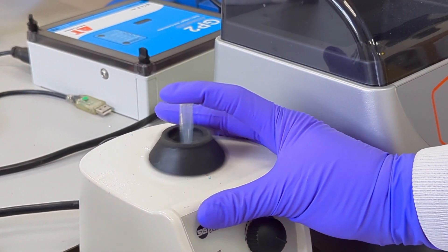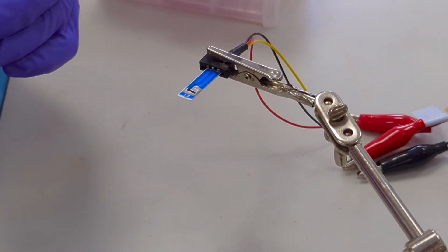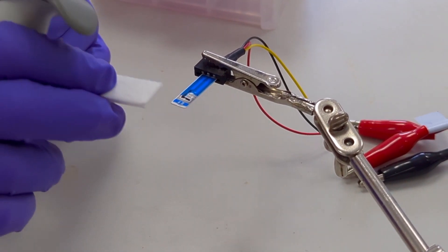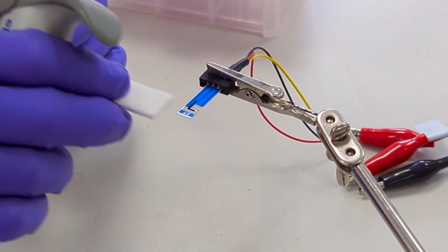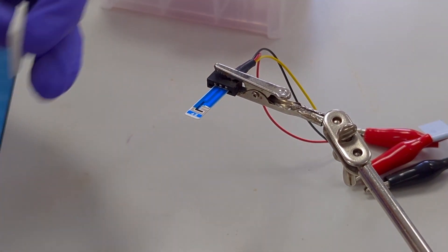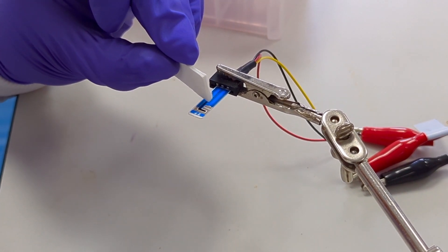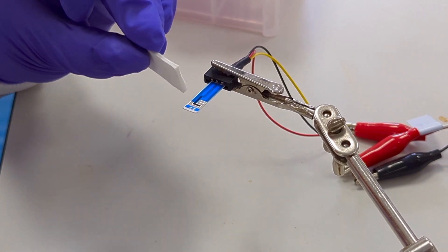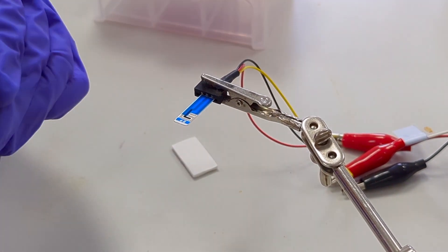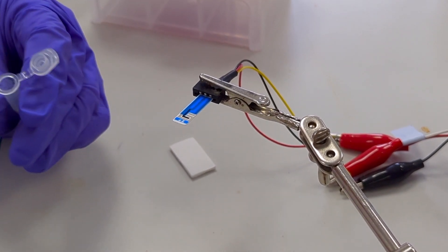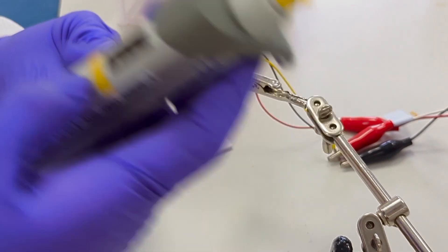Now, in order to homogenize the solution, I vortex it. Using a piece of blotting paper, I carefully wick off the buffer solution, making sure not to touch any of the electrodes. Once that's done, we can pipette 40 microliters of our prepared sample onto the sensor surface.